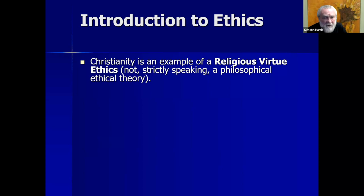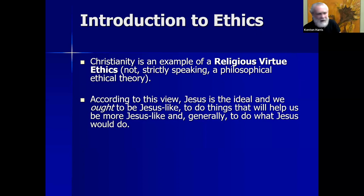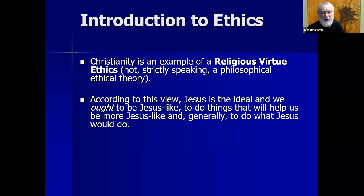Christianity is an example of a religious virtue ethics, not strictly a philosophical ethical theory. According to this view, Jesus is the ideal, and we ought to be Jesus-like and do things that help us be more Jesus-like — essentially, what Jesus would do. This inspired the widely popular WWJD artifacts — bracelets, cups, book bags — standing for 'What Would Jesus Do?' The idea is to use that as a guiding principle, choosing actions that emulate the hero.